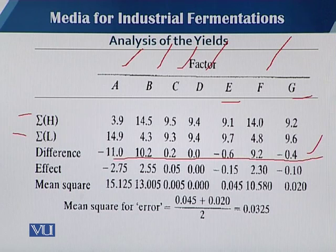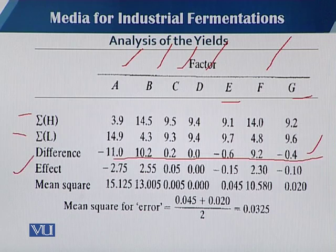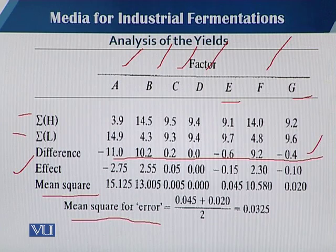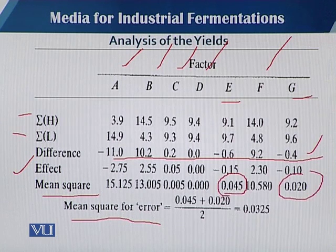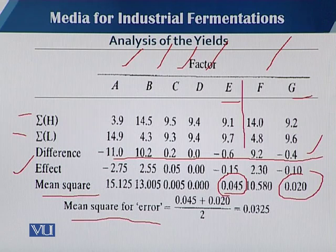Then we calculate the effect and the mean square. When we calculate the mean square for error, we get 0.045 and 0.020. These are the mean square for error because E and G are dummy trials, so they can be designated as the error that exists in this experiment.